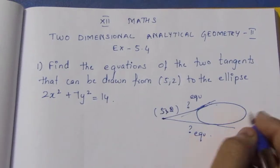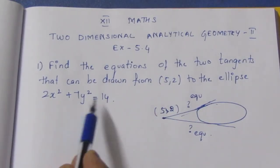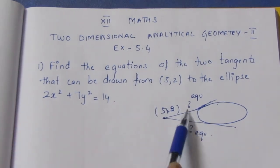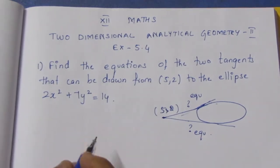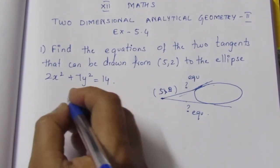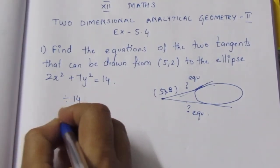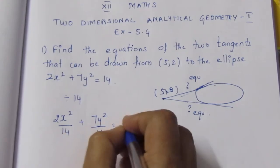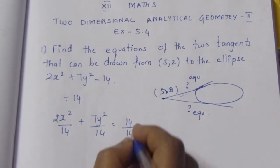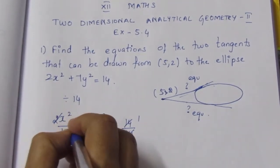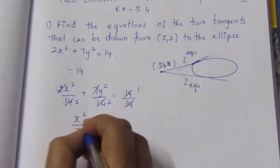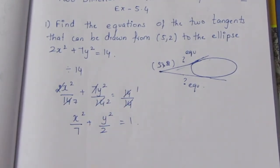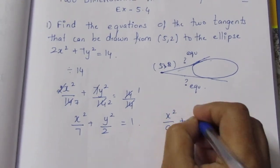The ellipse equation is usually in the form equal to 1. So we divide by 14 to get a proper ellipse equation. Dividing: 2x²/14 + 7y²/14 = 14/14, which gives x²/7 + y²/2 = 1. The general equation of the ellipse is x²/a² + y²/b² = 1, so here a² = 7 and b² = 2.